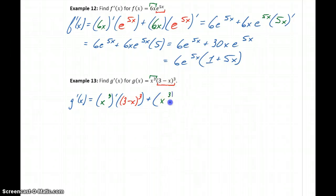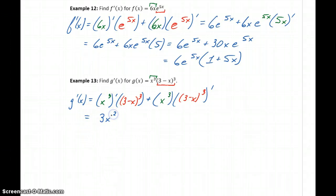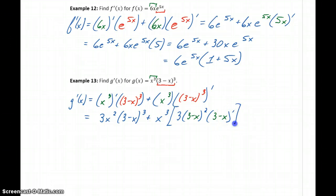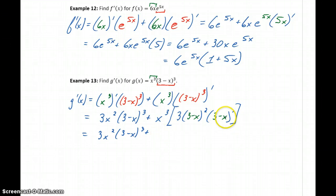And then the first function times the derivative of the second function. Our first derivative is a simple one — this becomes 3x squared times 3 minus x cubed, plus x cubed. Now we have to apply the chain rule to take the derivative of the second function. This will become 3 times that inner function, 3 minus x, squared — starting by applying the power rule — then multiplied by the derivative of that interior function.